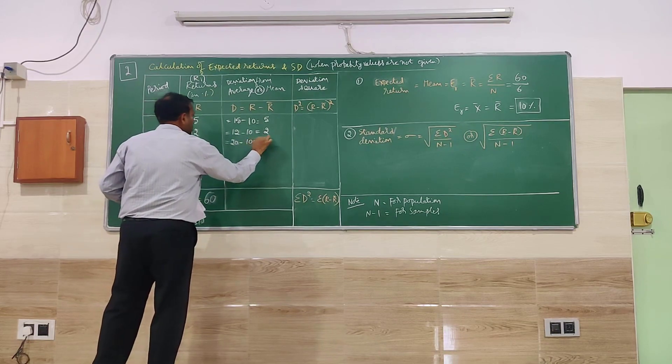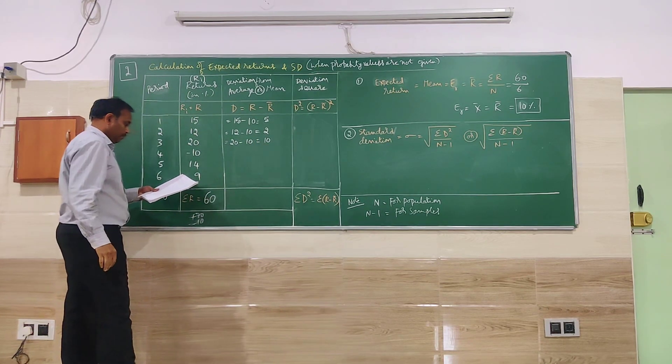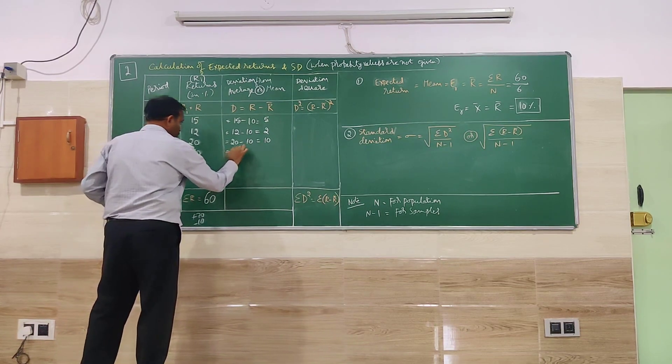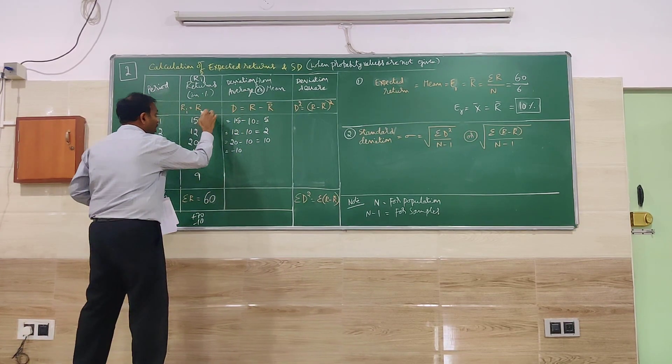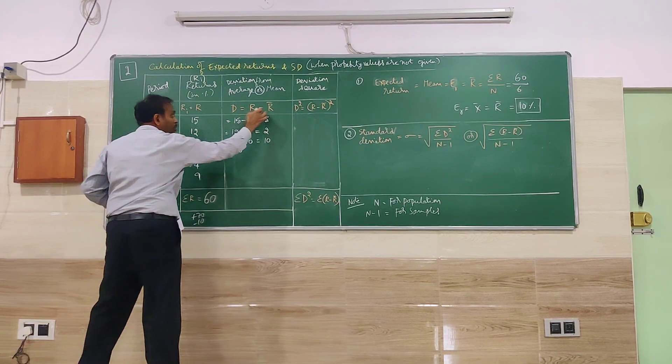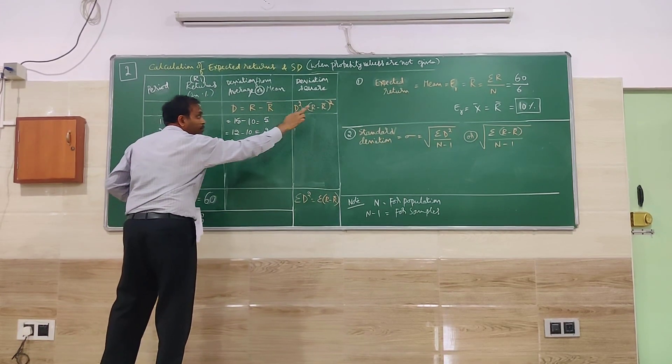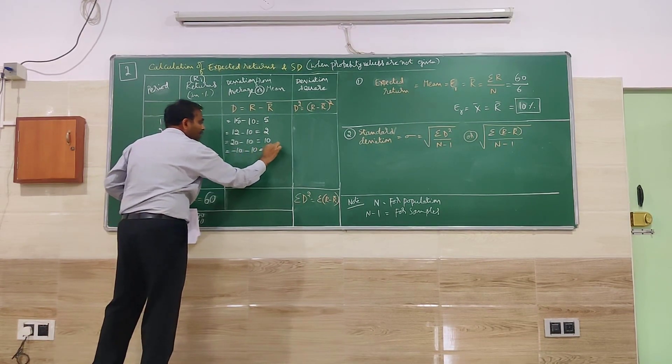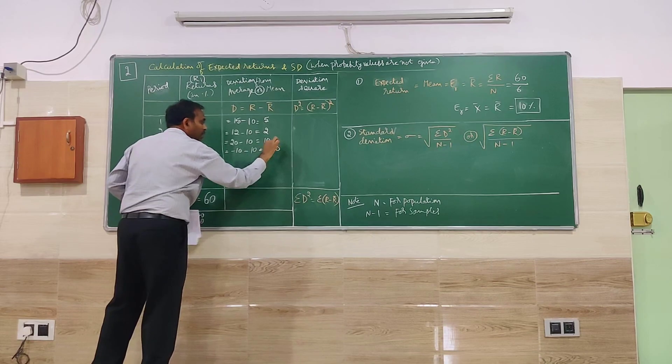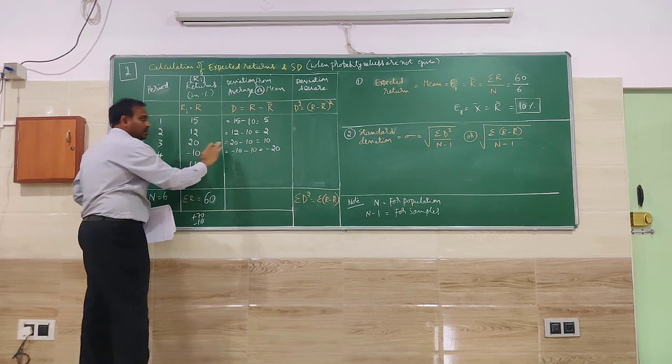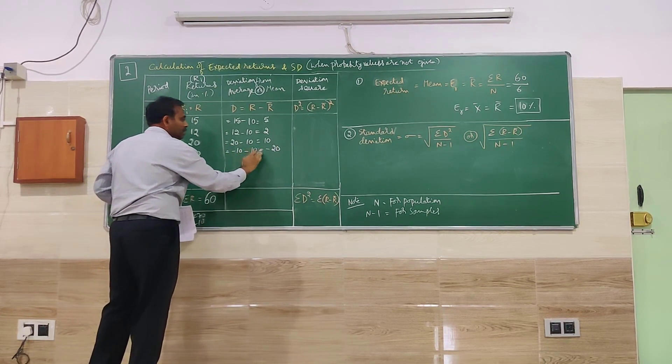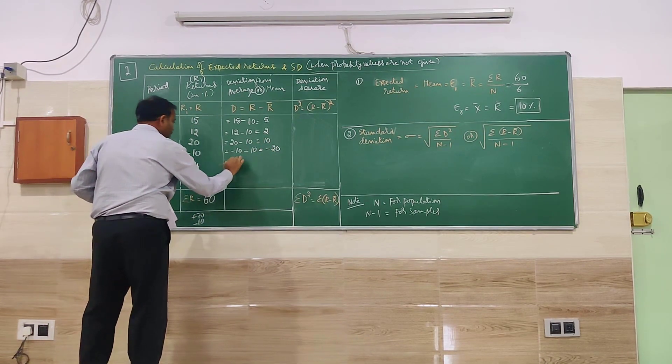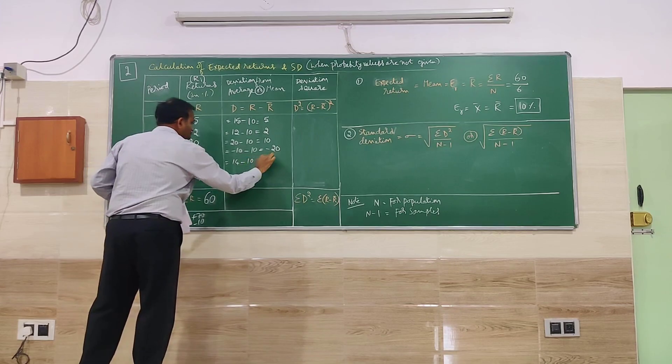Next here we have to be very careful. We have minus value. Minus 10 is the R value. And we have to write minus R bar. R bar is 10, so minus 10 and minus 10 will be minus 20. We have to add all the losses. That is both the losses. Minus 10 and minus 10 becomes minus 20. Next, 14 minus 10 is equal to 4.